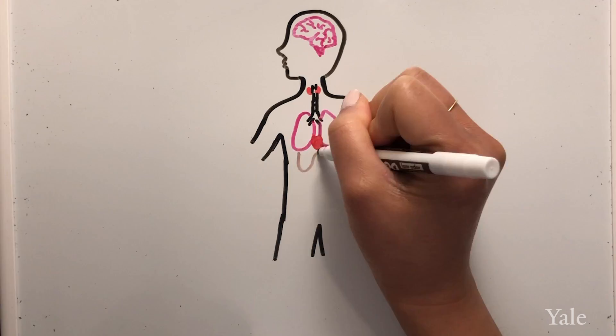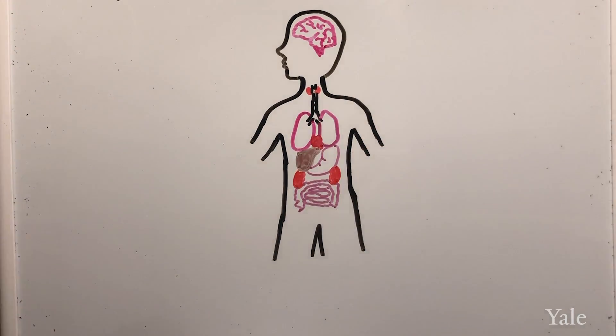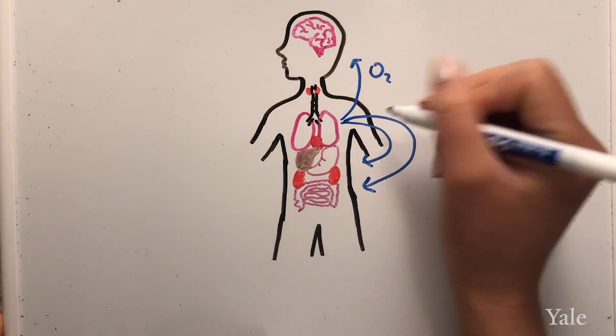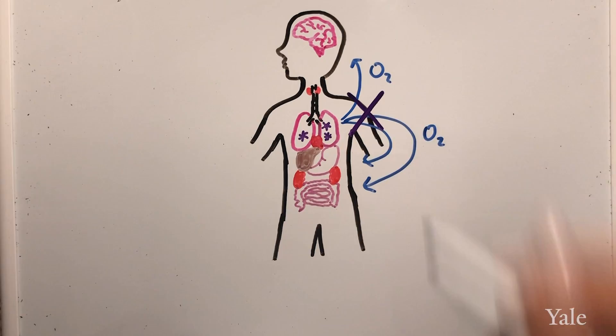Less oxygen in your blood may mean your vital organs don't have enough oxygen to keep working. This can lead to organ failure causing them to shut down.